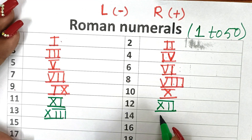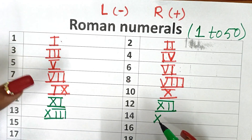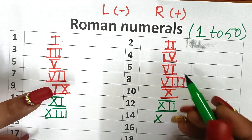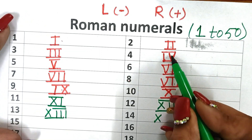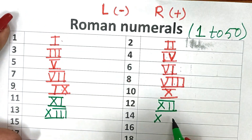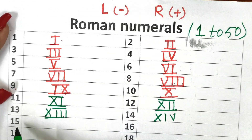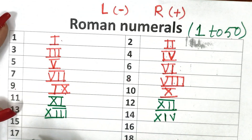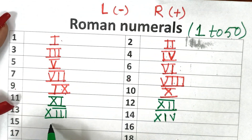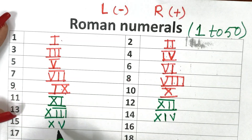Then 14. Now for 14, how do you write 4? I have written first 5 and then subtracted 1 from it. So likewise 10 and then 4 is XIV. 15: first write 10 and then 5, so 10 plus 5 is XV.